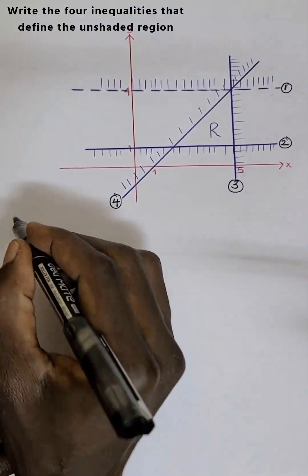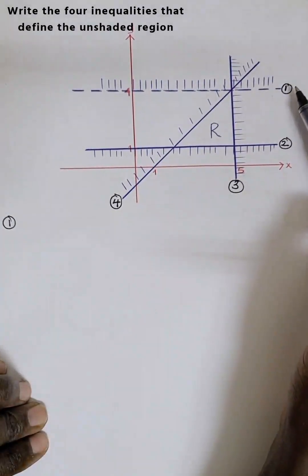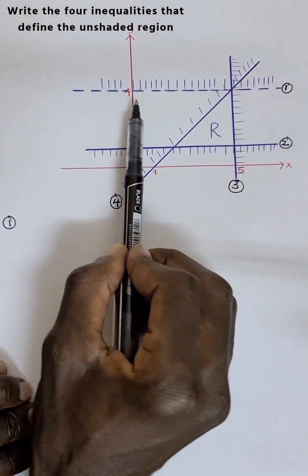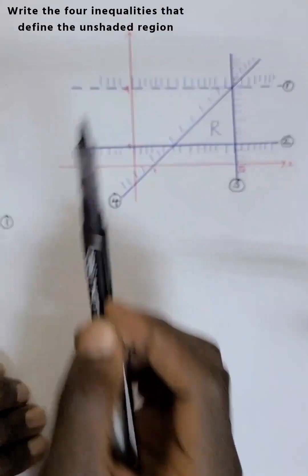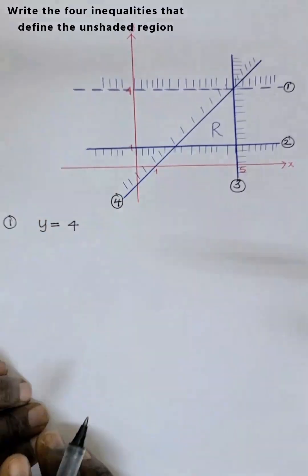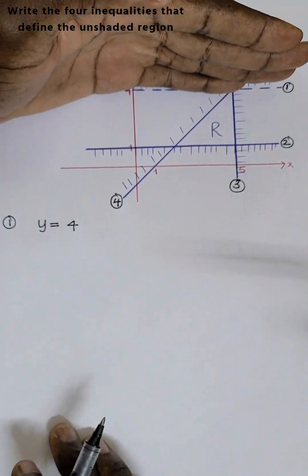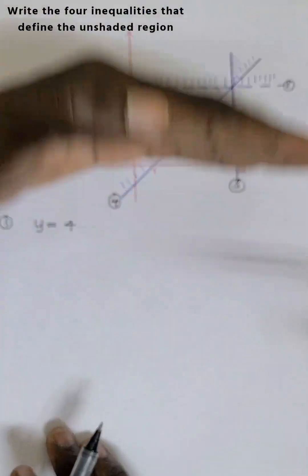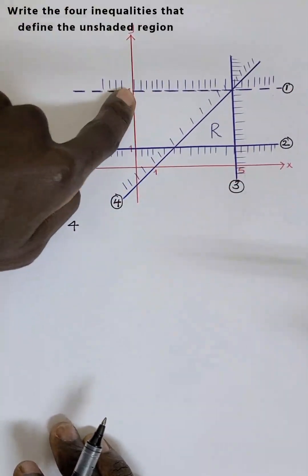Let's start with line one. To answer line one, you just have to know where this line is passing. It's passing through the y-axis at point zero comma four. So we say y equals four. Now, the unshaded part is the one which is down — we are looking for something which is down, and those numbers that are down are less than four.